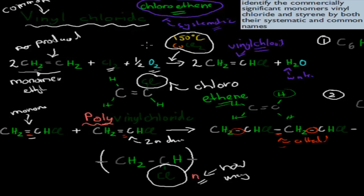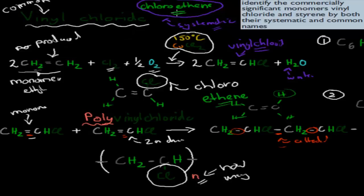You can compare common names and systematic names to how we name human beings. So for example, humans would be our common name, and our systematic name would be our scientific name — Homo sapiens. That's very similar to vinyl chloride: it's just what we call it in everyday life, but its systematic name is chloroethene.